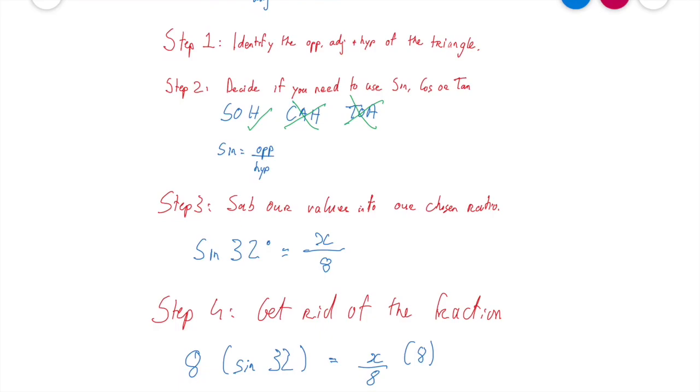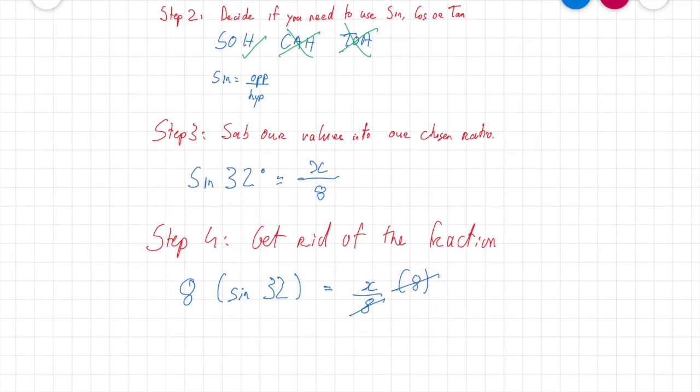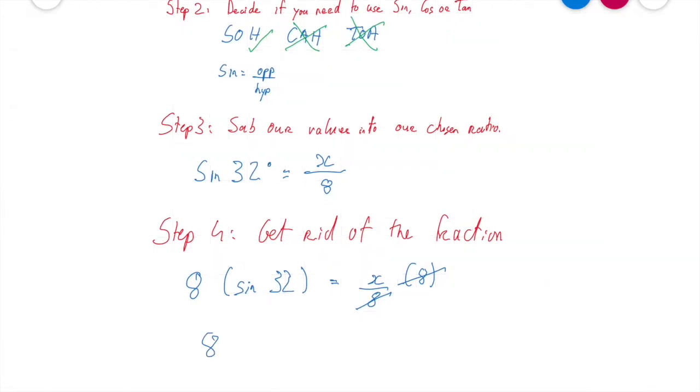Now, my two eights here are going to cancel out. So that's going to leave me with an x. So I have now eight sine 32, they multiply together and basically stick together like that, is equal to x. Excellent. So I have x completely by itself. That's happy days.